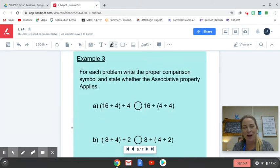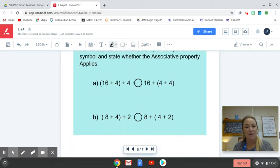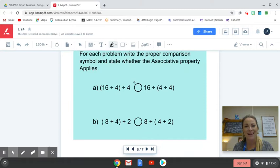Taking a look here, we have a couple more examples. These are really good for you to practice. So it says write the proper comparison symbol and state whether the associative property applies or not. So we just have two examples here. Again, I'd like you to pause this video, do the work, and unpause when you're ready to check your answer.